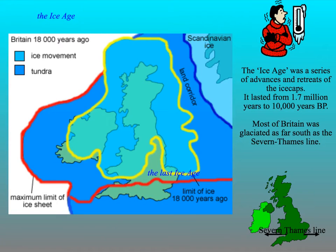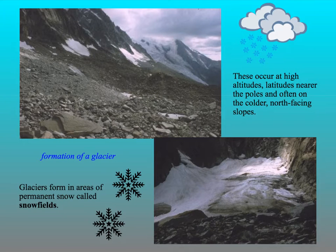10,000 years ago the ice age ended. Basically, the whole of the UK, apart from the most southern part, was covered in ice. This ice actually shaped the landscape that we have today, so if anybody's been up to the Cairngorms, that mountain range and the scenery there was created by the ice. And from the ice, glaciers were formed, and basically glaciers form in areas where there's permanent snow all year round, called snowfields.